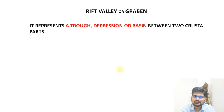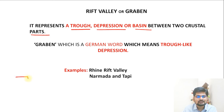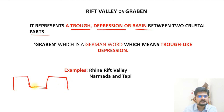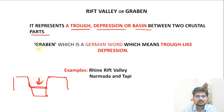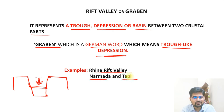A rift valley or graben is the opposite of a horst — it represents a trough, depression, or basin between two crustal parts that has subsided. 'Graben' is a German word meaning trough-like depression. Examples include the Rhine Rift Valley in Europe and the Narmada and Tapi Rift Valleys in India.